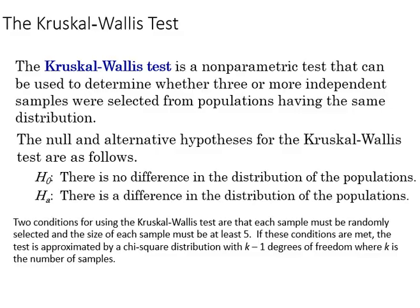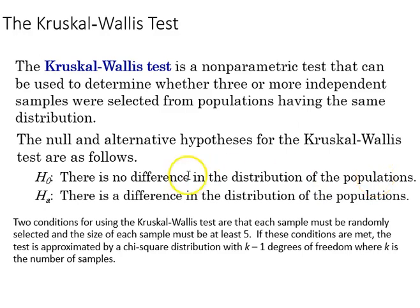This video is going to review a non-parametric test called the Kruskal-Wallace test. This test is used when we want to find out if three or more independent samples were selected from populations with the same distribution. The null hypothesis is there's no difference in the population distributions, and the alternative is that there is a difference.